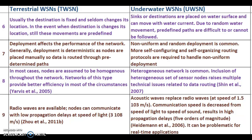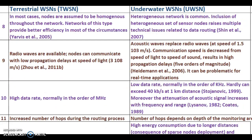Point 8: In TWSN, nodes are assumed to be homogeneous throughout the network, which provides better efficiency in most circumstances. In UWSN, a heterogeneous network is common, and the inclusion of heterogeneous sensor nodes raises multiple technical issues related to data routing. Point 9: In TWSN, radio waves are available and nodes can communicate with low propagation delay at the speed of light. In UWSN, acoustic waves replace radio waves at the speed of approximately 1,500 meters per second. Communication speed decreases from the speed of light to the speed of sound, resulting in high propagation delays — five orders of magnitude higher — which can be problematic for real-time applications.